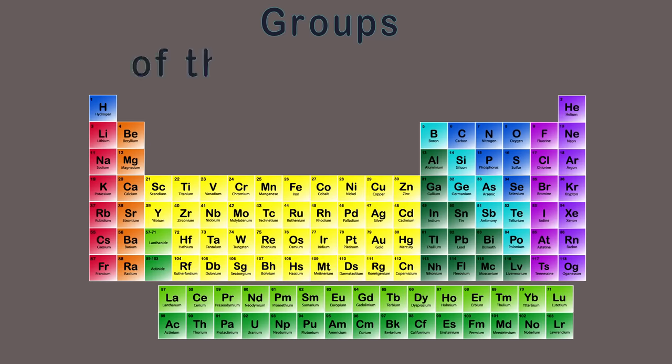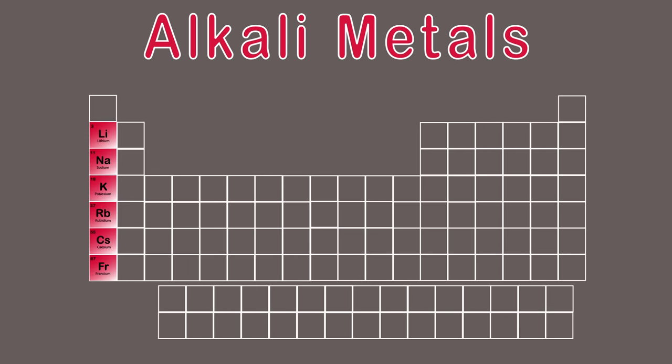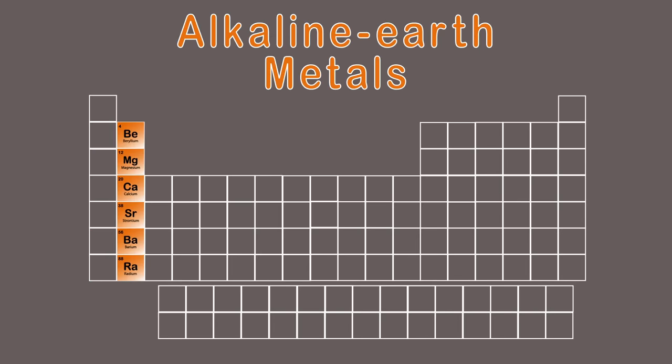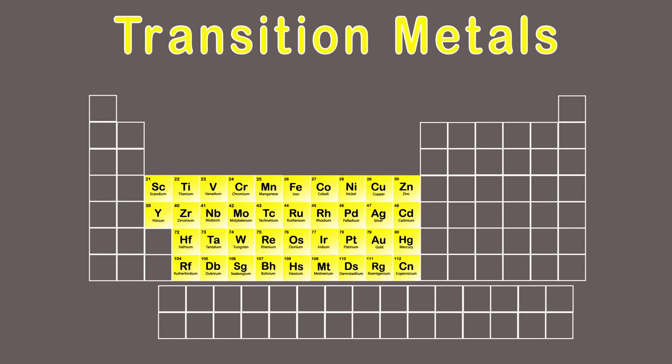Here we have the groups of the periodic table. Learn about these groups and sing if you are able. Alkali metals and alkaline earth, the transition metals are here for what it's worth.